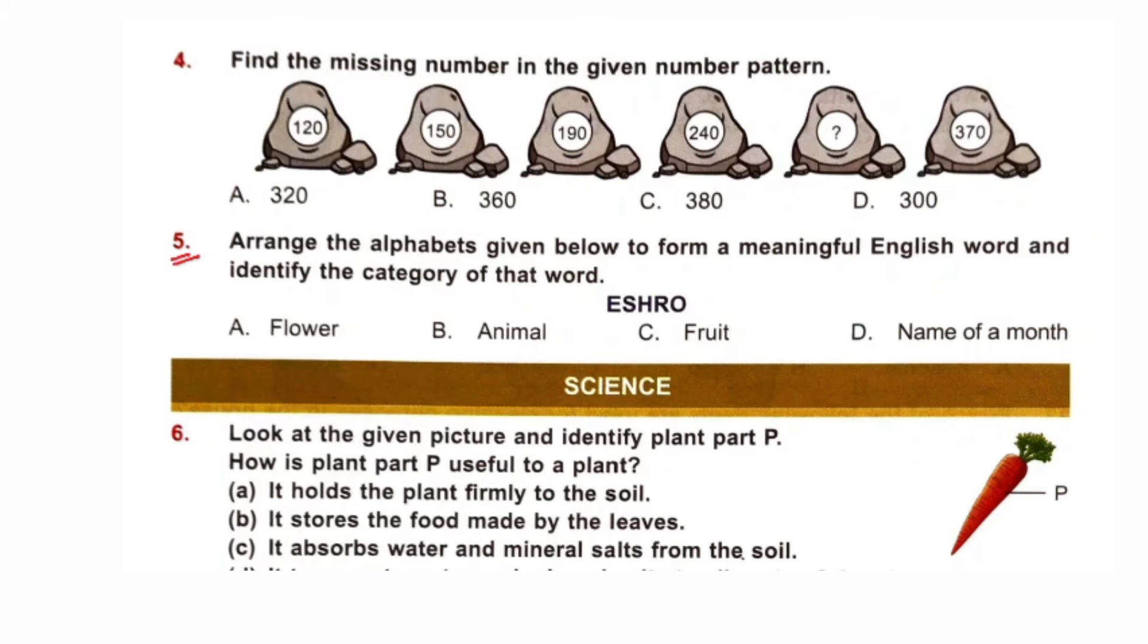Question number 5. Arrange the alphabets given below to form a meaningful English word and identify the category of that word. Word can be formed: Horse. Horse is an animal. So, option B is correct. Animal.